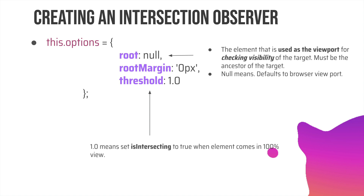So isIntersecting will become true as soon as the element comes 100% into view. You have the option to set it to 90% or any other value depending on your requirements. In our case we'll go with 1.0, so as soon as that load more button comes into 100% view when the user scrolls the screen, isIntersecting will automatically become true inside the callback function.